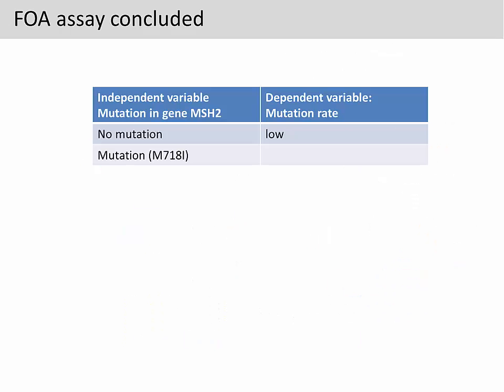Now let's look at how the whole project is set up. Our independent variable is whether there is a mutation in the MSH2 gene. Our control is the wild-type MSH2. Our experiment is the mutated MSH2 carrying the M718I SNP — a single nucleotide polymorphism that causes methionine at position 718 to be changed to isoleucine. We can introduce both plasmids into yeast and measure mutation rate using the FOA assay. When we introduce the wild-type MSH2 into yeast, the mutation rate should be lowered because MSH2 can repair mutations.